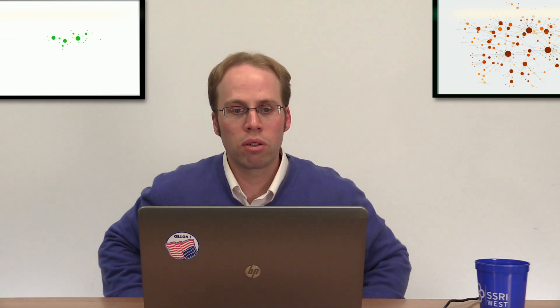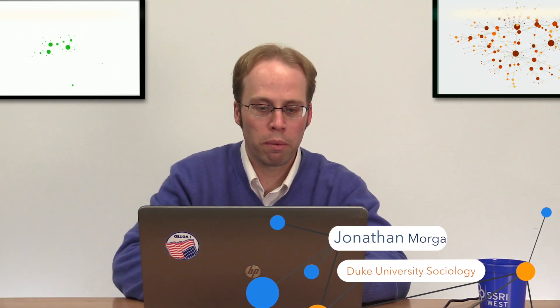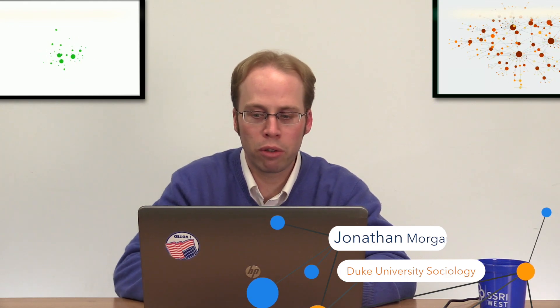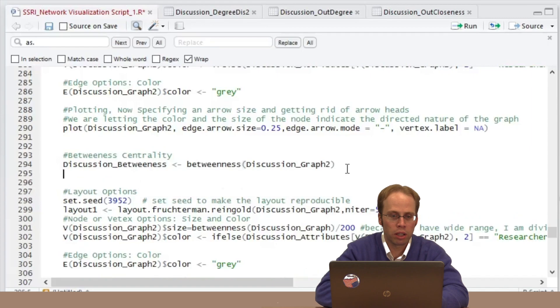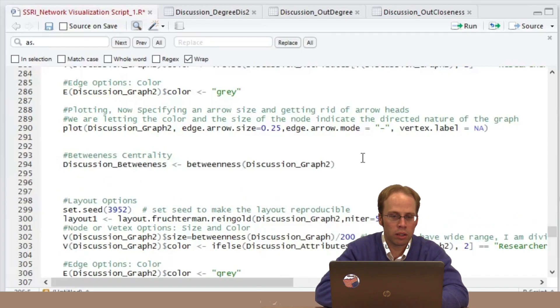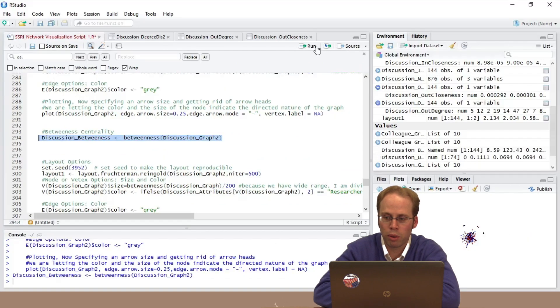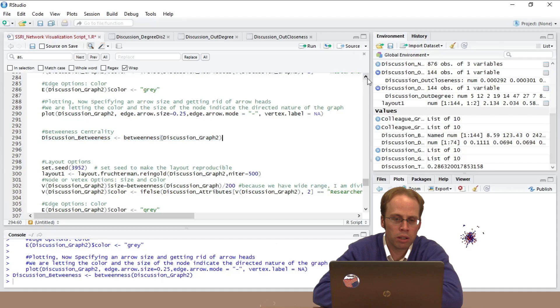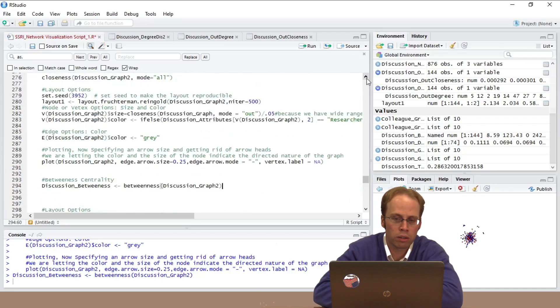We're doing betweenness centrality. This is the brokerage one which many careers have been made off of, frankly. So I'm going to make this data object called discussion betweenness. I already have this in here this time and I'm kind of excited about betweenness centrality. I want to make it a data frame again so I have one little step.